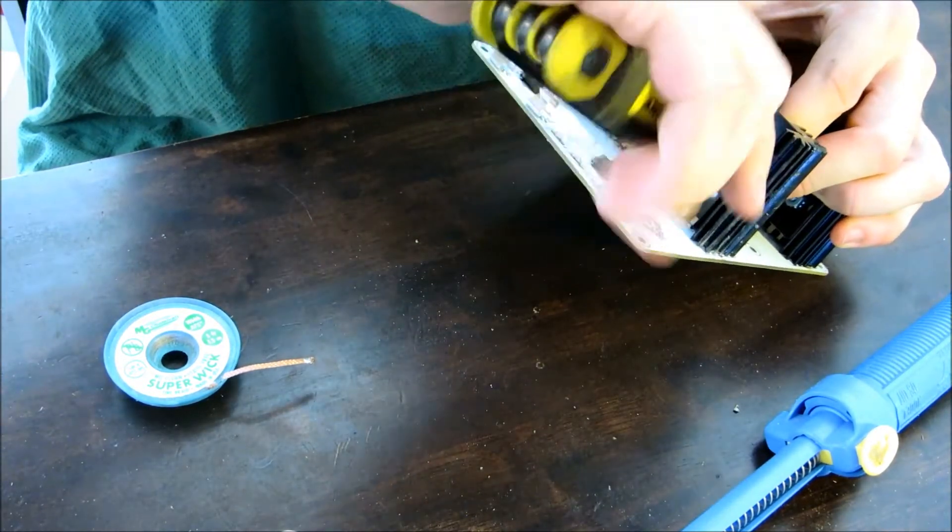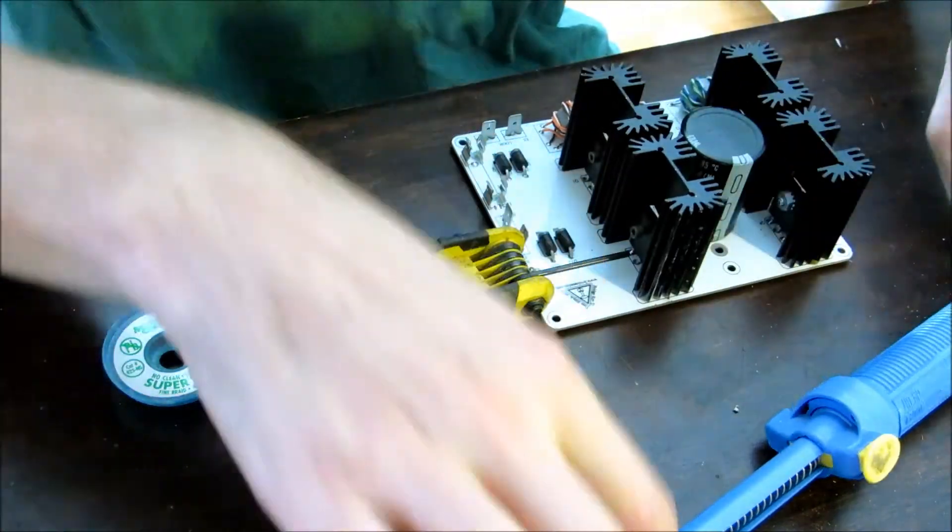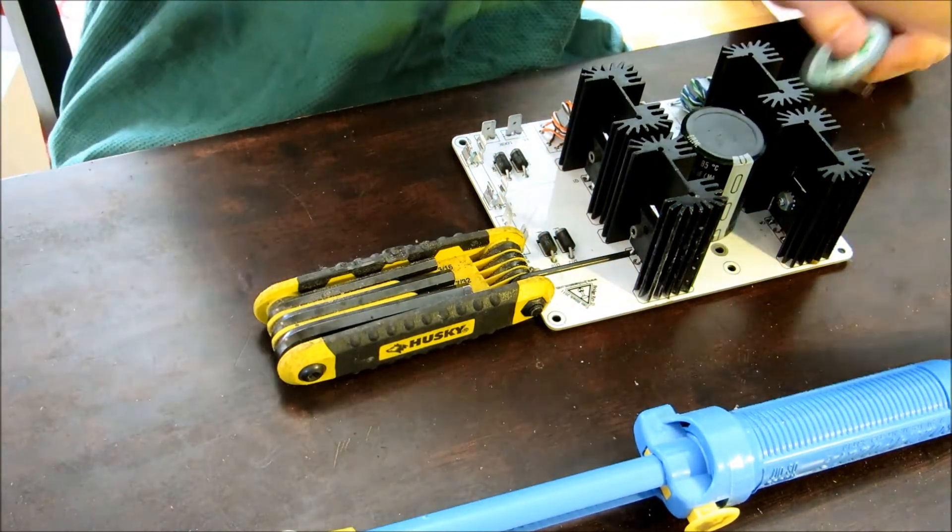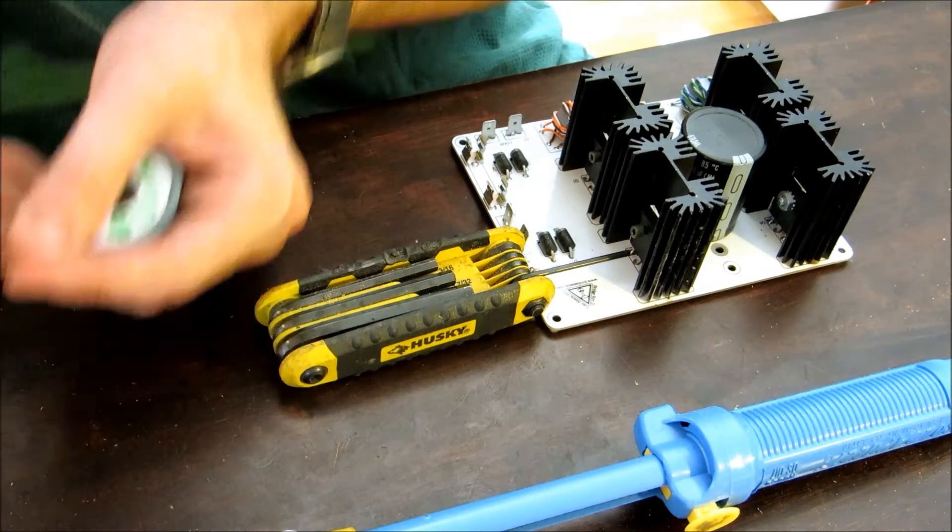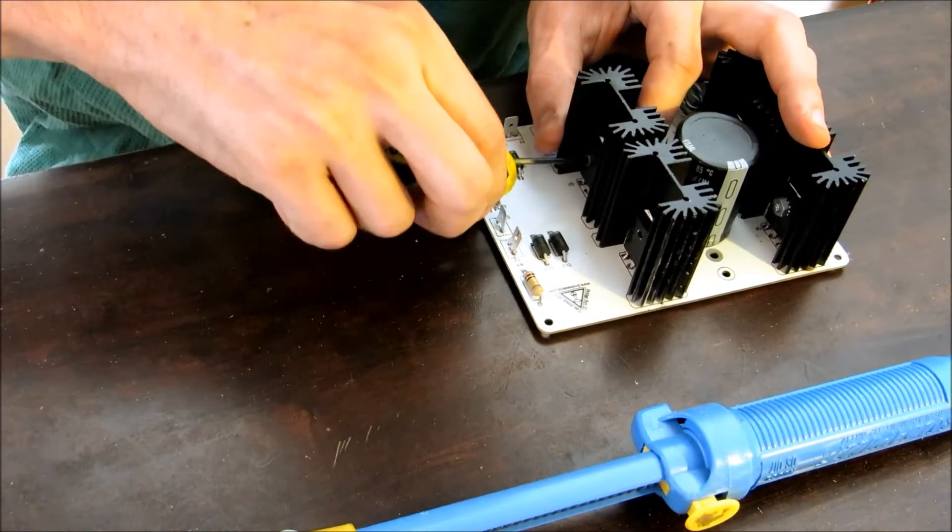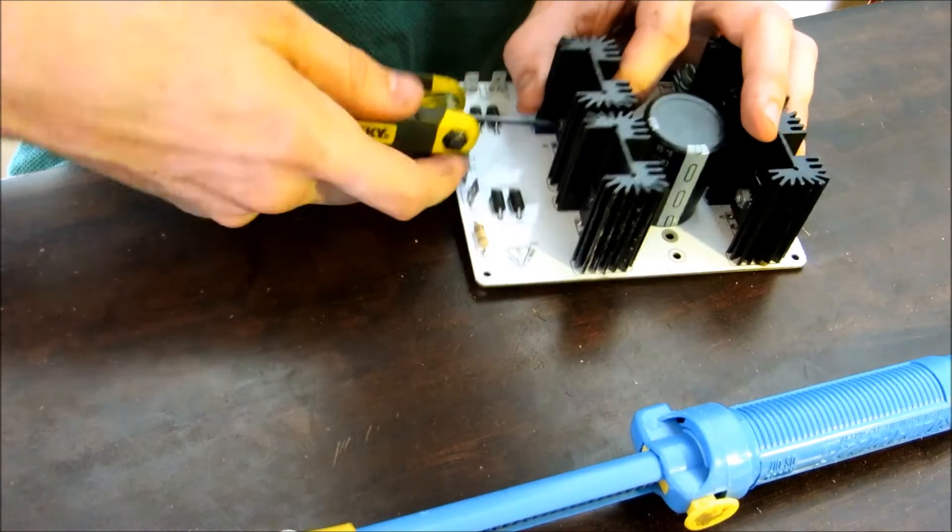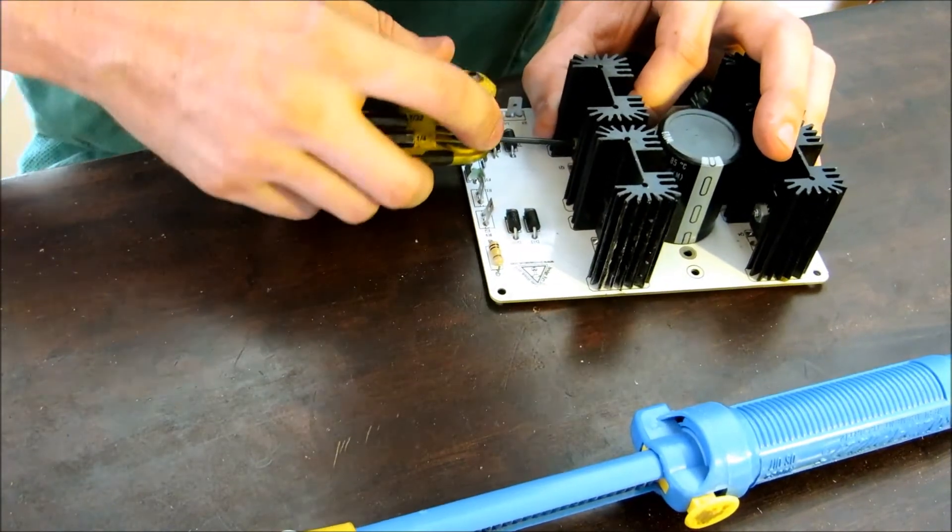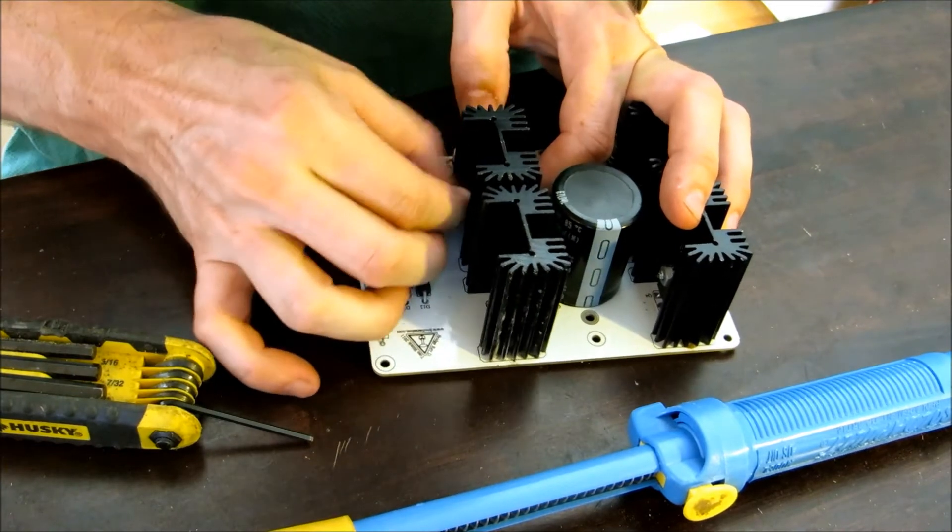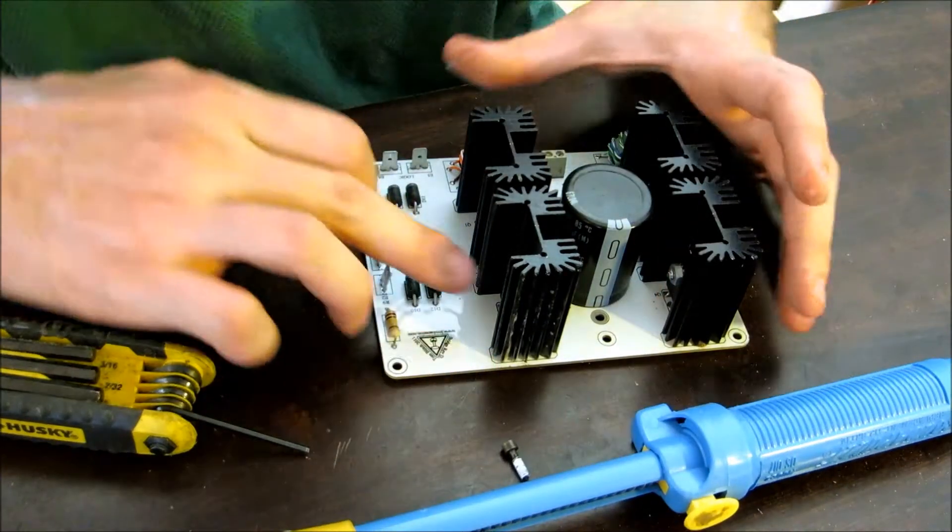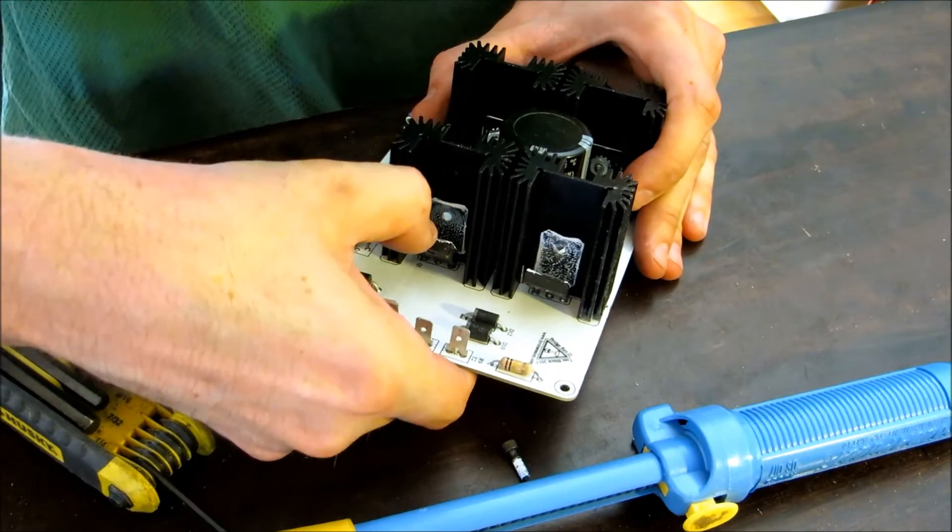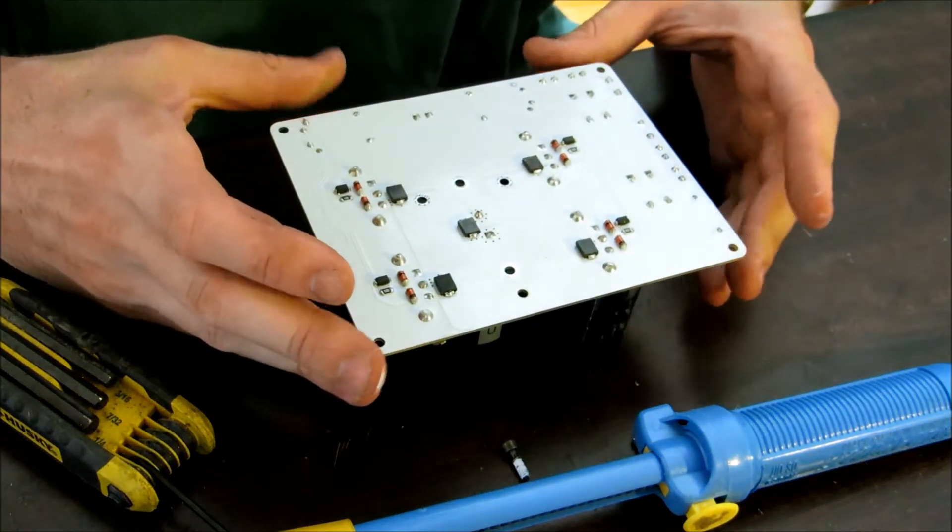So this is what I do. You're going to need a desoldering pump and possibly some wick. Don't always need the wick, but sometimes I actually have to use it. Okay, so back to this. Take that off. Get the screw out, and take these two out. All right, so now what you want to do is pull them away from the heat sink like this. Flip it back over, and grab your pump.